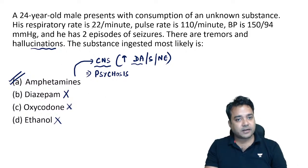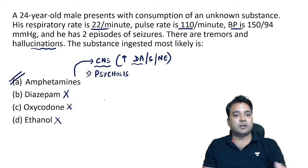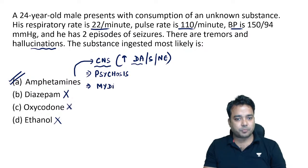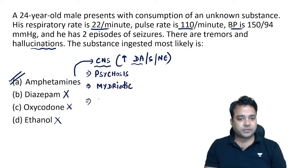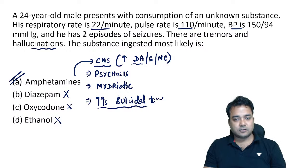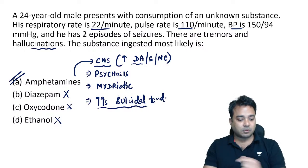All the vital parameters are raised. What about the pupil? Just like cocaine and LSD, amphetamine is also a mydriatic — it leads to dilated pupils. This is one poison which increases suicidal tendencies in the addicts. These are the clinical clues which help us solve such questions.